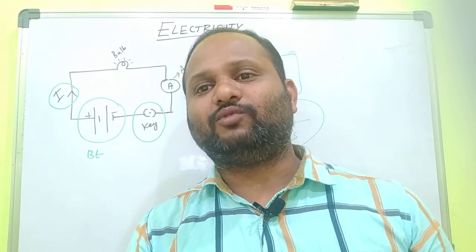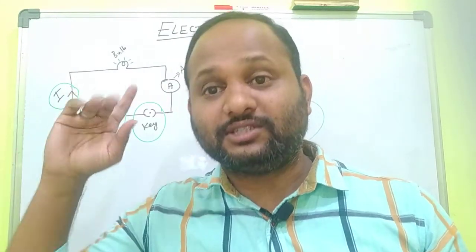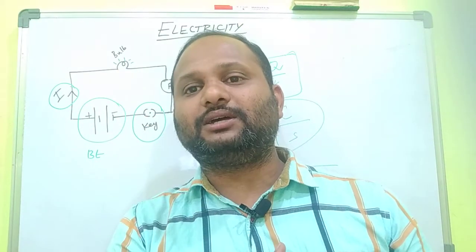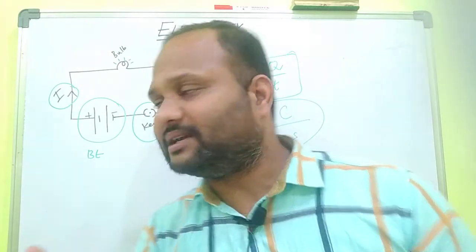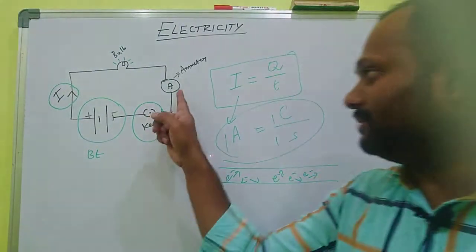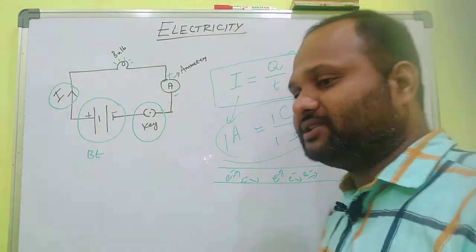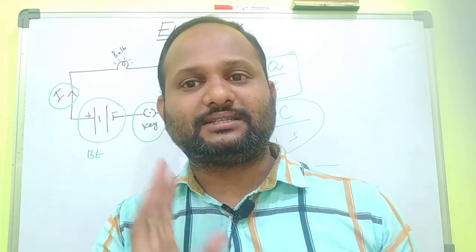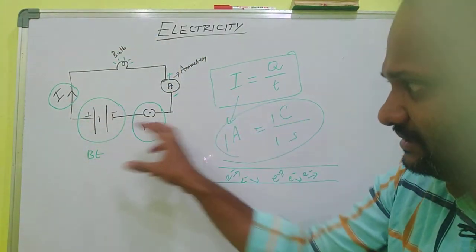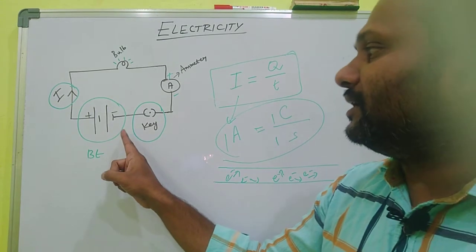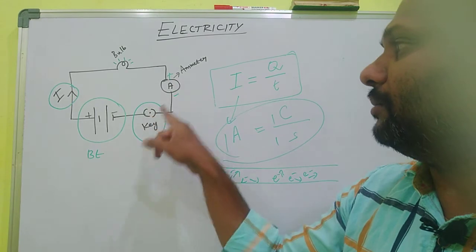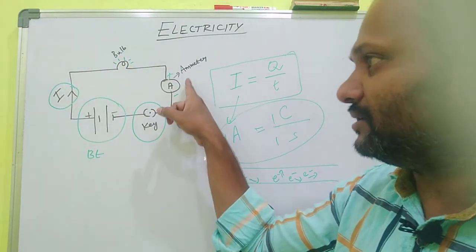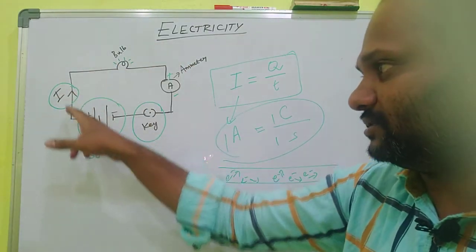How do we measure this current? What device is used to measure the current flowing in a circuit — is it one ampere, two ampere, or three ampere? With the help of one instrument called an ammeter, we can measure electric current. Ammeter is an instrument used to measure the amount of current flowing in an electric circuit. In this circuit diagram, I include battery, bulb, ammeter, and key — four components — and the direction of current is from plus to minus.